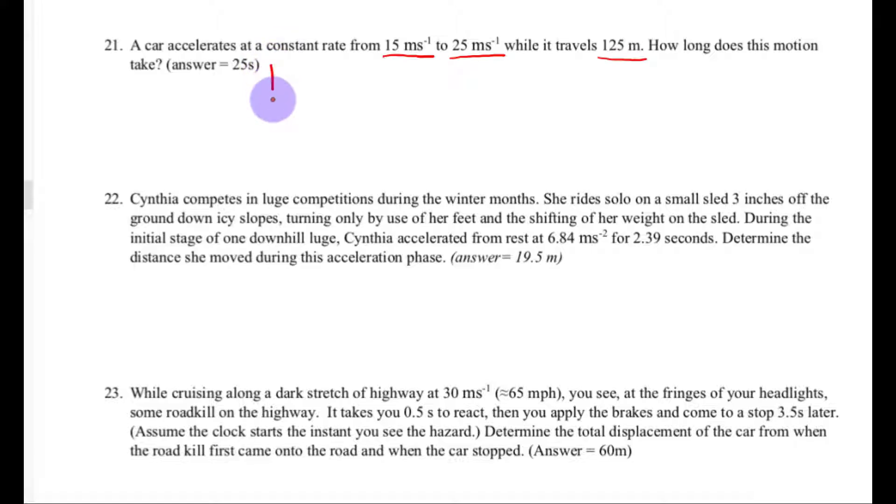Okay, so again we're going to be using that last equation. I can see even before making the SUVA table there's no acceleration involved. So S is the displacement, 125 meters. U is the starting velocity.